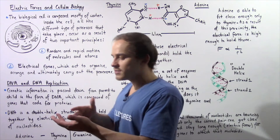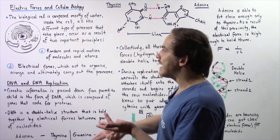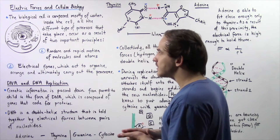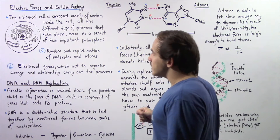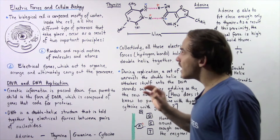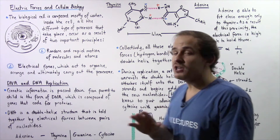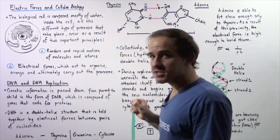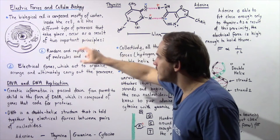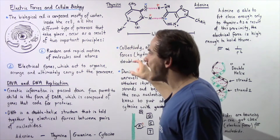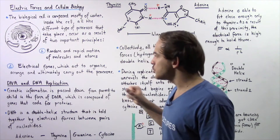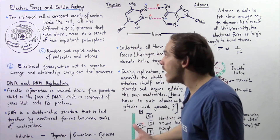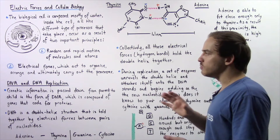Electric forces govern all the different types of processes that take place within the human cell. This includes processes like protein synthesis, cell respiration, translation, and DNA replication, which we'll talk about in this lecture. All the different types of processes inside the cell take place as a result of two different principles: one, random and rapid motion of the molecules and atoms found within the cytoplasm; and two, electrical forces which act to organize, arrange, and essentially carry out all the processes within the human body.